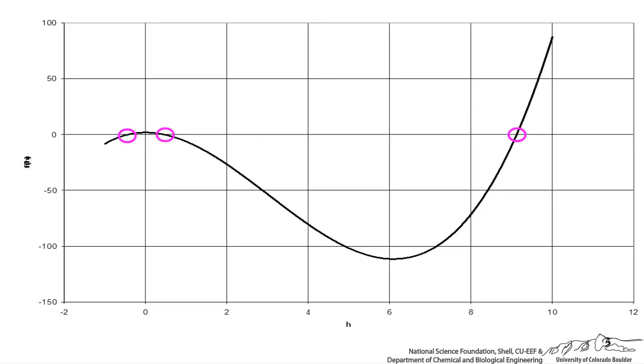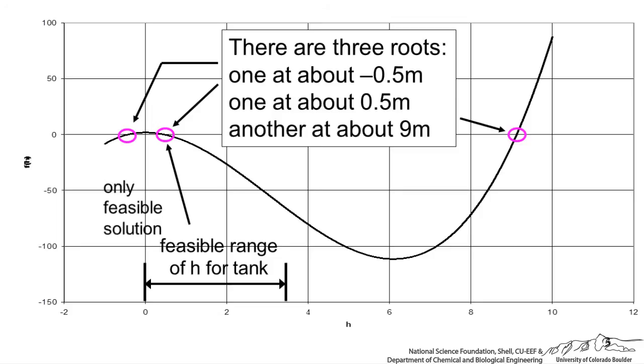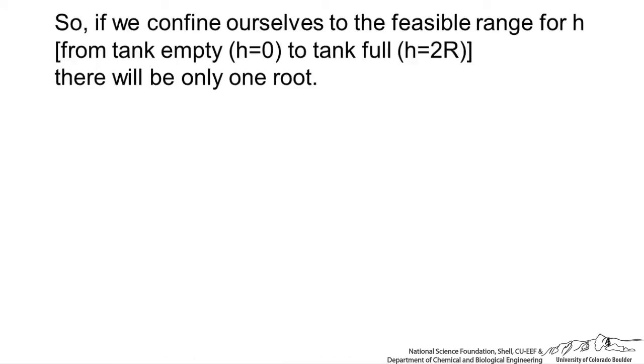It's going to have three roots. One looks like it's about negative 0.5 meters, one at about half a meter, and another at about 9 meters. The only feasible range is between zero and about 3.05 meters. Obviously, there's only one feasible solution and we can neglect the other two roots of this equation. So there's multiple roots but only one makes sense. If we confine ourselves to the feasible range from the empty tank to a full tank, there's only going to be one root.